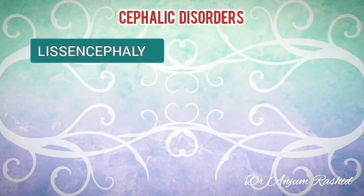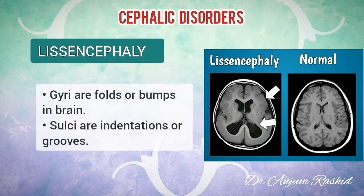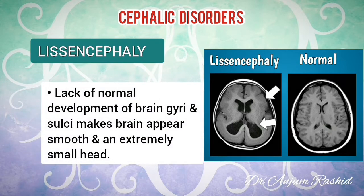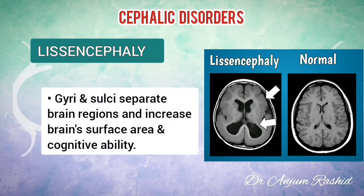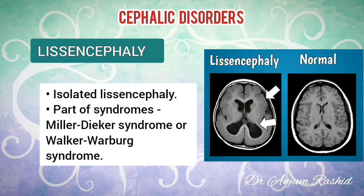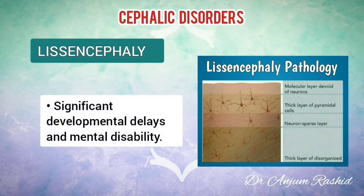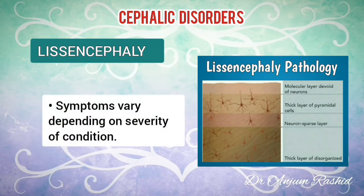The next important type is lissencephaly, which means smooth brain. It is a spectrum of severe and rare brain malformations that affect unborn babies in the womb. Gyri are the folds or bumps in your brain and sulci are the indentations or grooves. In lissencephaly, the lack of normal development of the brain gyri and sulci makes an affected baby's brain appear smooth, with an extremely small head. Gyri and sulci are important because they separate brain regions and increase the brain's surface area and cognitive ability. Lissencephaly can occur on its own, known as isolated lissencephaly, or as part of certain syndromes such as Miller-Dieker syndrome and Walker-Warburg syndrome. Children with lissencephaly often have significant developmental delays and mental disabilities, but these may vary from child to child depending on the severity of the condition.